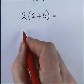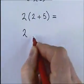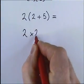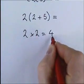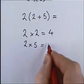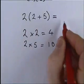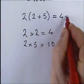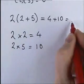Okay, now we've got 2 lots of the 2 and 2 lots of the 5. Which, if we write that down underneath, we've got 2 lots of the 2 which is 4. And we've got 2 lots of the 5 which is 10. So in total, we've got 4 plus 10 which is 14.